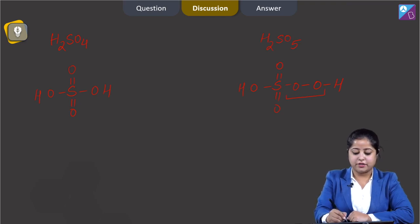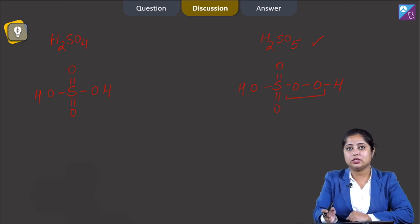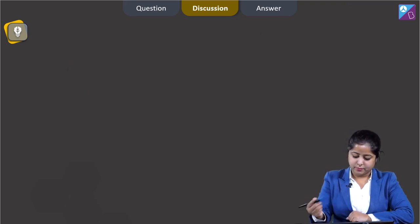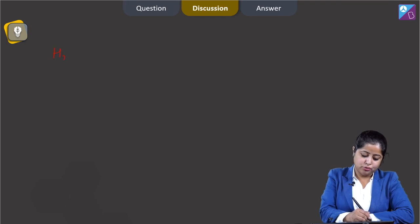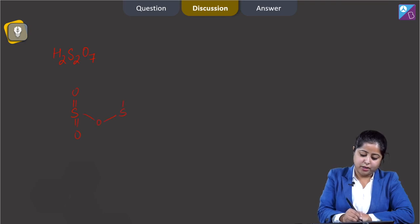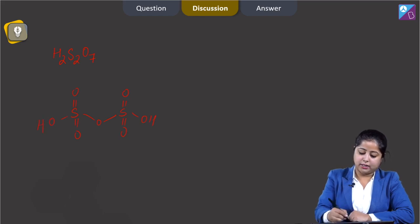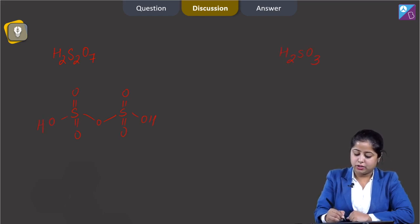That means the correct answer is obviously H2SO5, but let us draw the structure of the remaining oxo acids. We have H2SO7: S double bond O, double bond O, then O, S double bond O, double bond O, OH, OH.